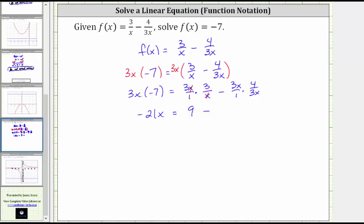And then minus, again, simplifying before multiplying, we have a common factor of 3x between the numerator and denominator. 3x divided by 3x simplifies to 1. This simplifies to just 1 times 4, which is 4. And now simplifying the right side, 9 minus 4 is 5, giving us -21x = 5.